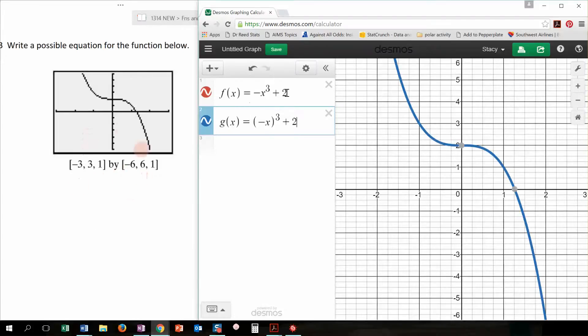And both of these would be the solution to possible equations for the function that is over here. Now, again, you can adjust your window in your graphing calculator, and you just do that by clicking Window on your calculator, and you can adjust the window.